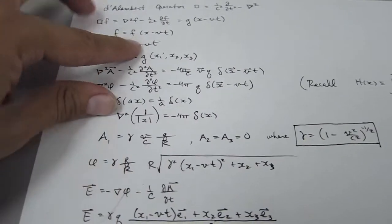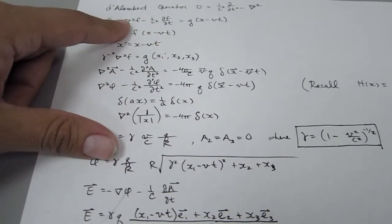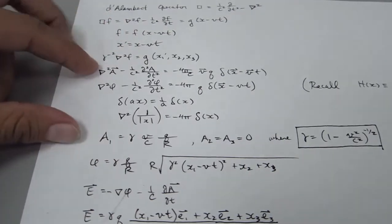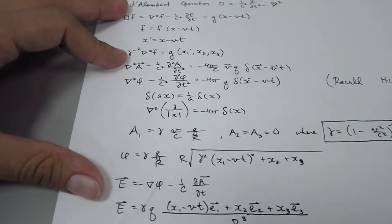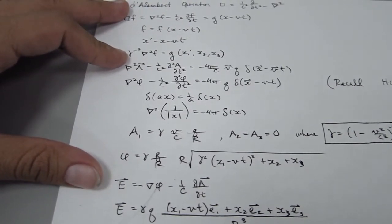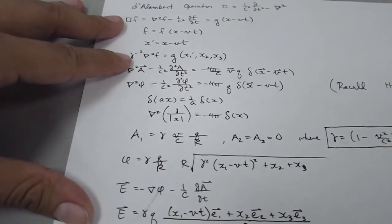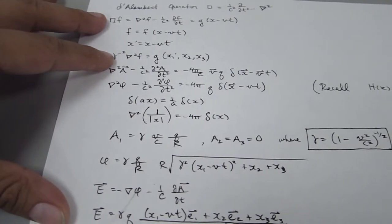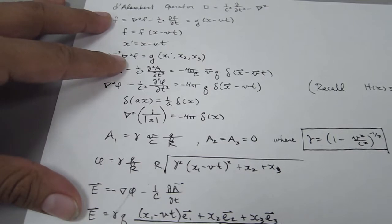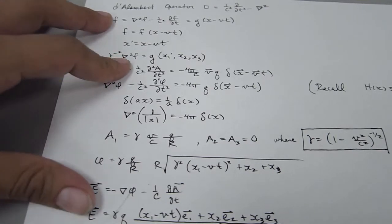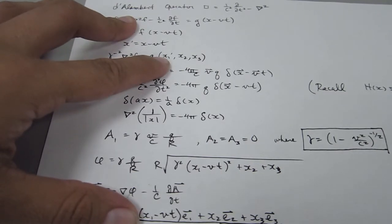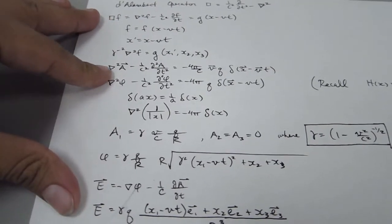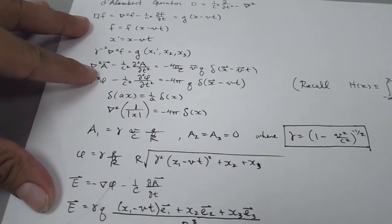When we plug this into the equation and expand — operating on f with x1, x2, and x3 — we get like terms on one side, which we write as 1 over gamma-squared times the Laplacian on f equals g, but now the first coordinate is Galilean transformed.